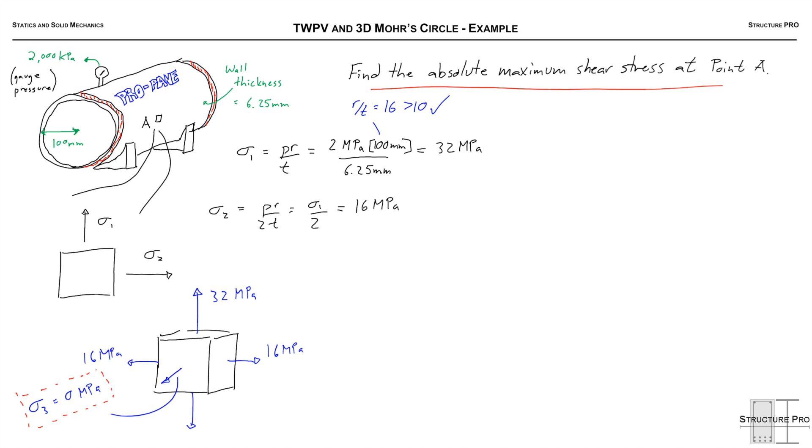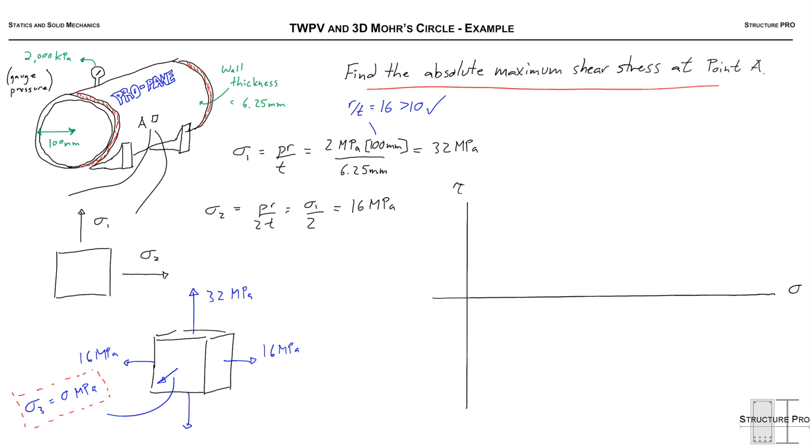I would suggest going back to those videos if you're not fresh on those equations. Let's dive right in and start finding the different parts of the Mohr circle. First of all, the center of the circle, sigma average, is 32 plus 16 MPa divided by 2, or 24 MPa.